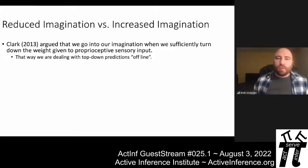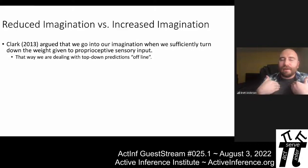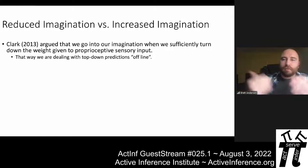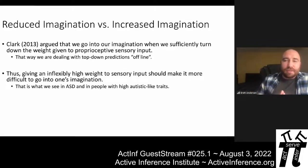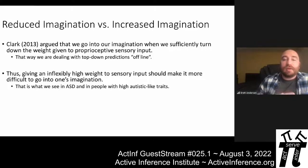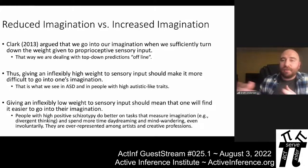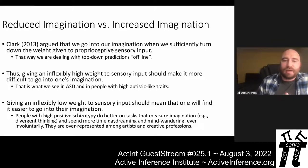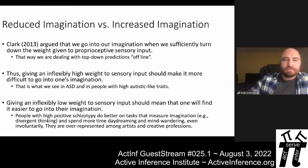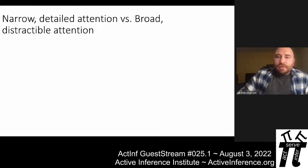Andy Clark in a 2013 paper argued that we go into our imagination when we sufficiently turn down the weight given to proprioceptive sensory input, dealing with top-down predictions offline, unmoored from sensory input. This means giving an inflexibly high weight to sensory input makes it more difficult to enter imagination, while giving an inflexibly low weight makes it easier. We do find this difference along the autism-schizotypy continuum: people high in autistic-like traits often have imaginative deficits, while people high in positive schizotypy do better on tasks measuring imagination like divergent thinking, spend more time daydreaming and mind wandering, and are overrepresented among artists and creative professions.